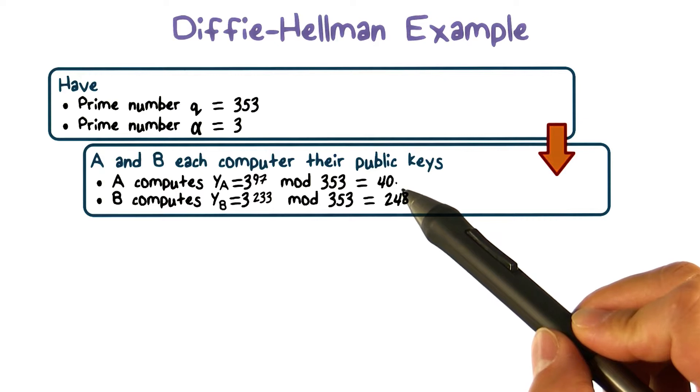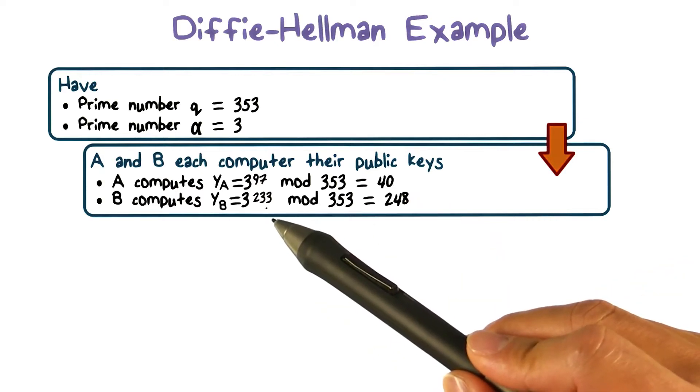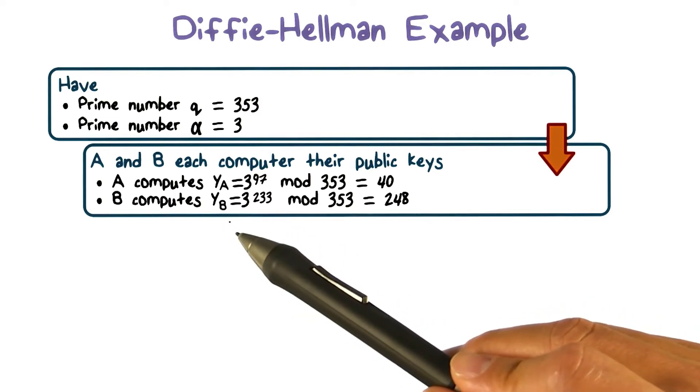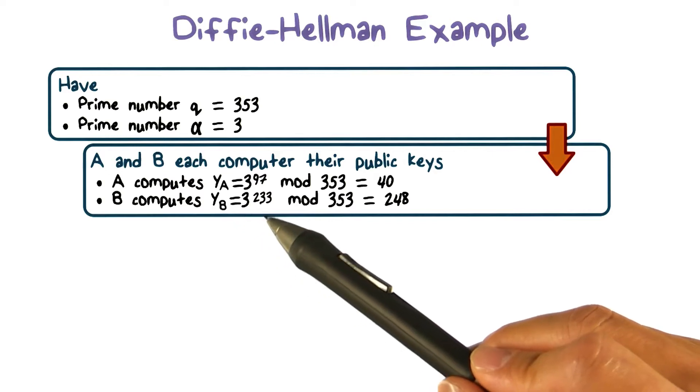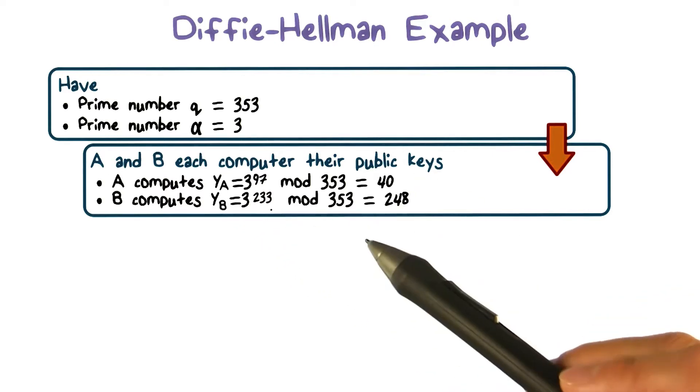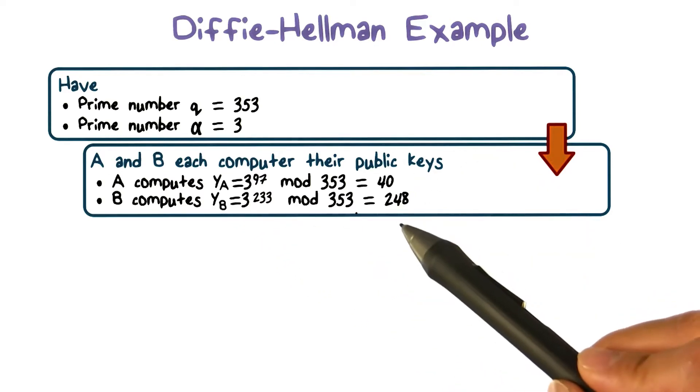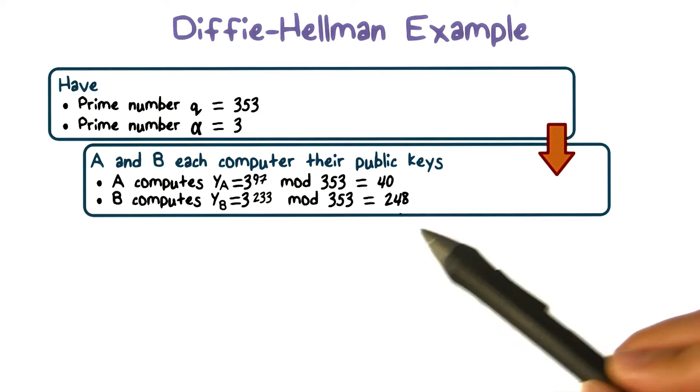User B selects a random number, which is a secret to himself, and this value is 233. And he computes yB, which is 3 raised to the power of 233 mod 353, and the result is 248.